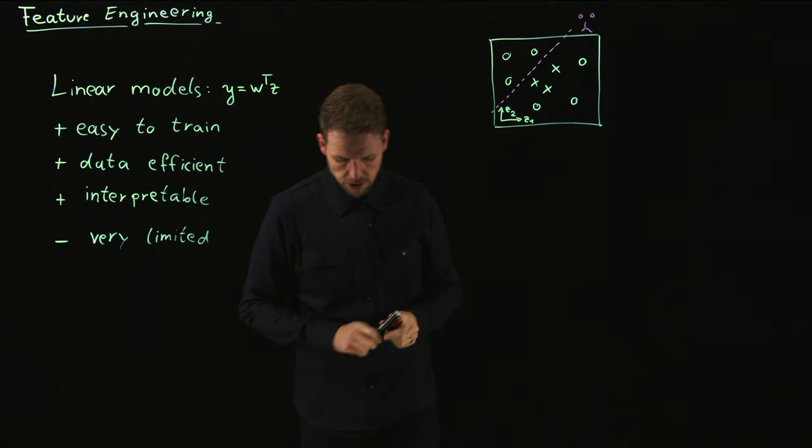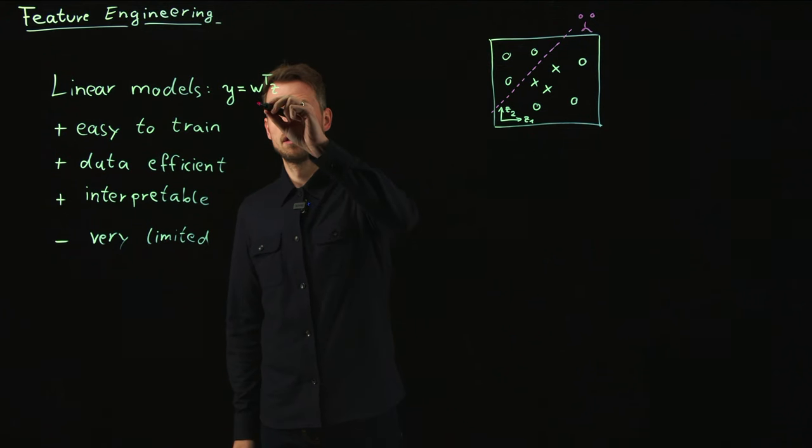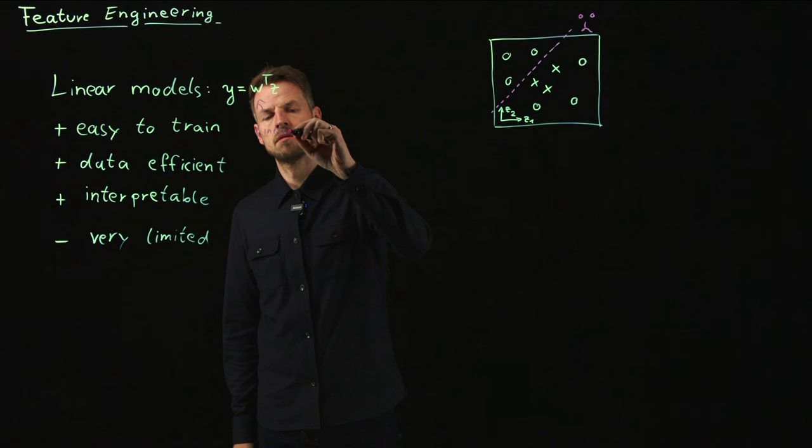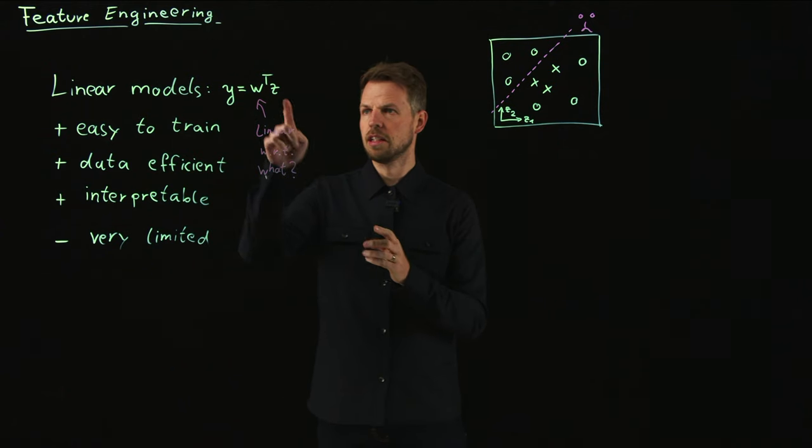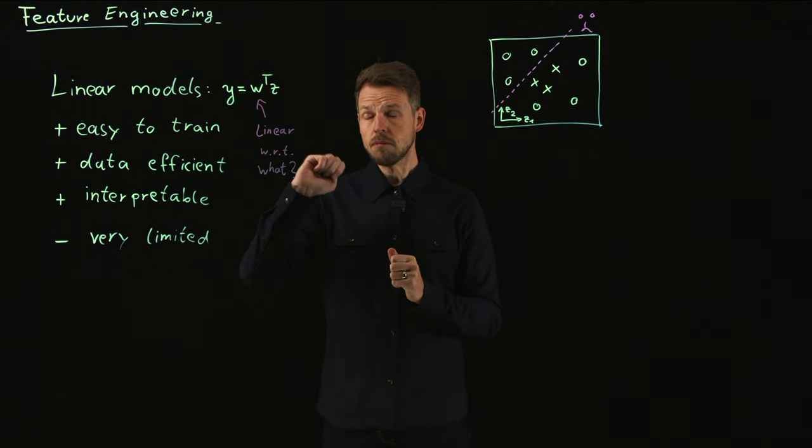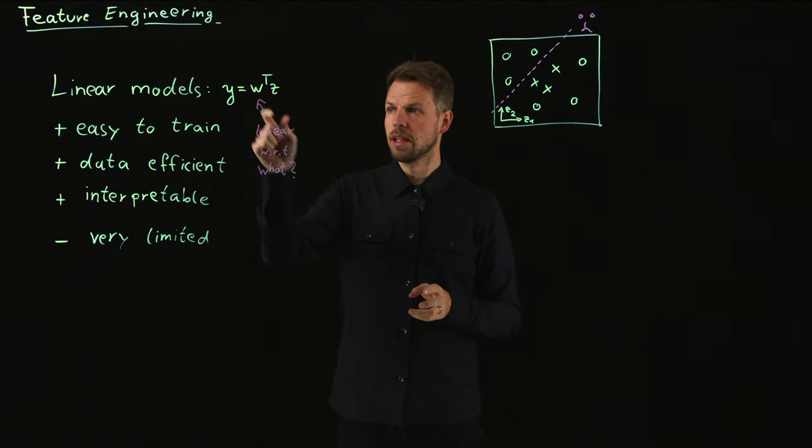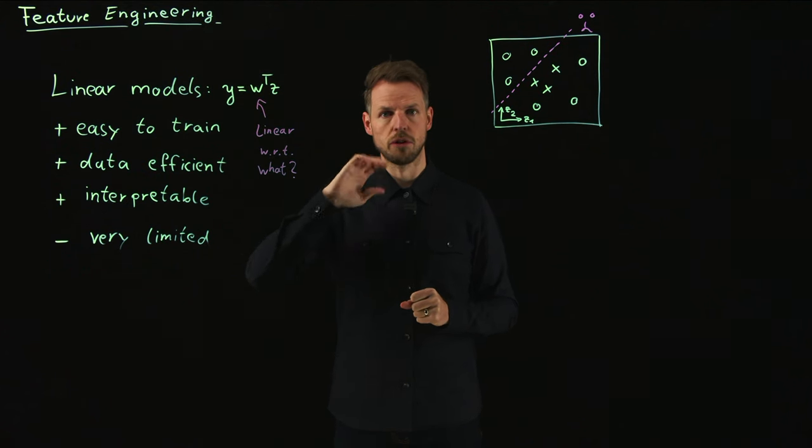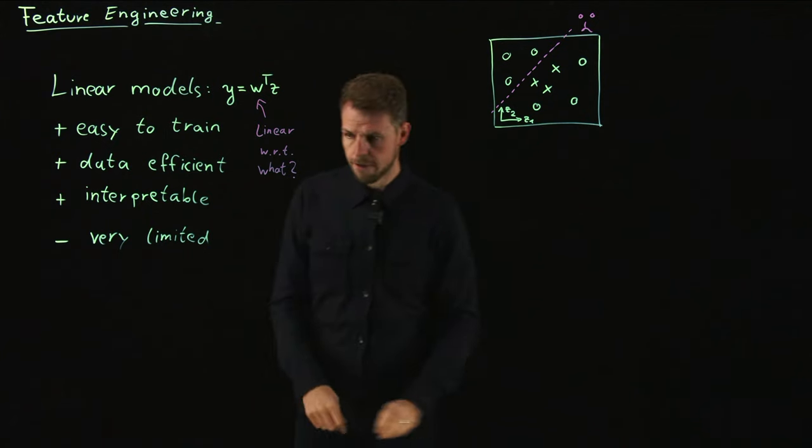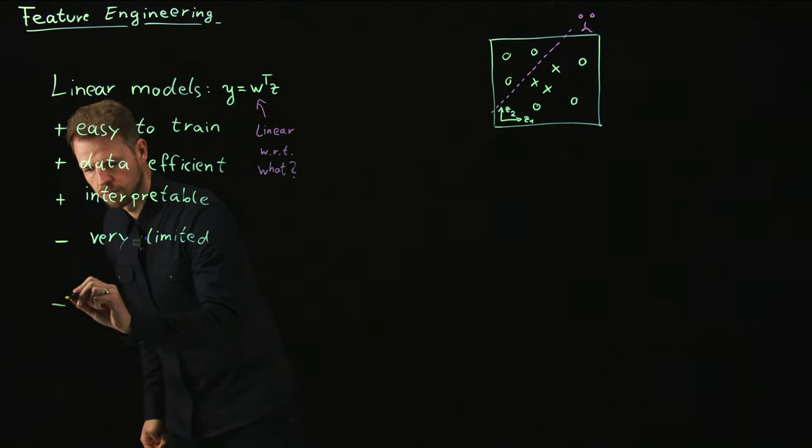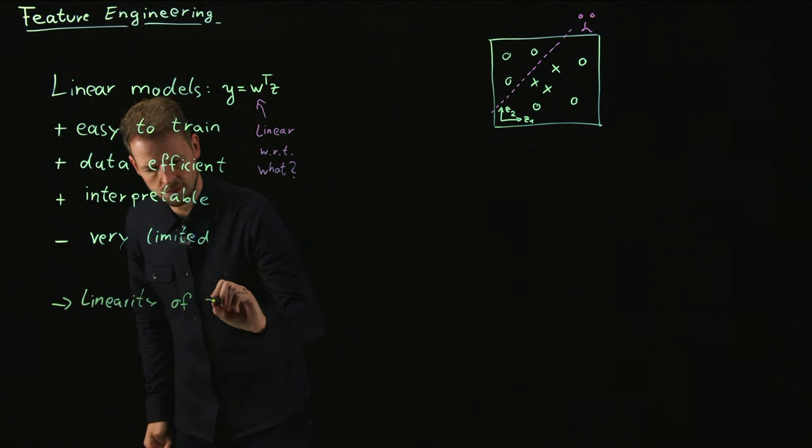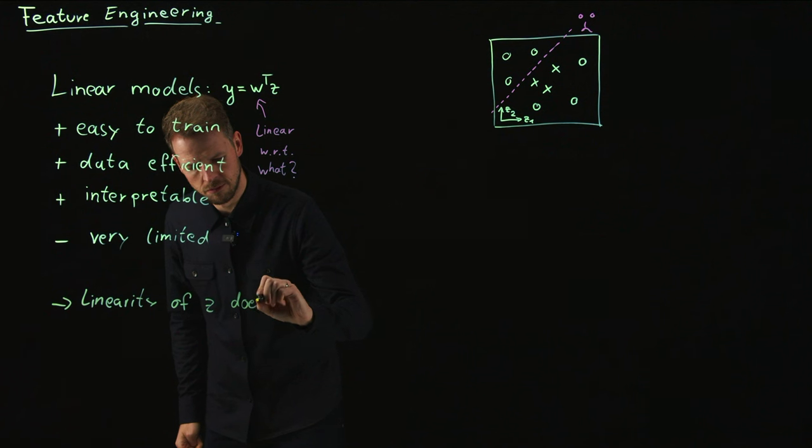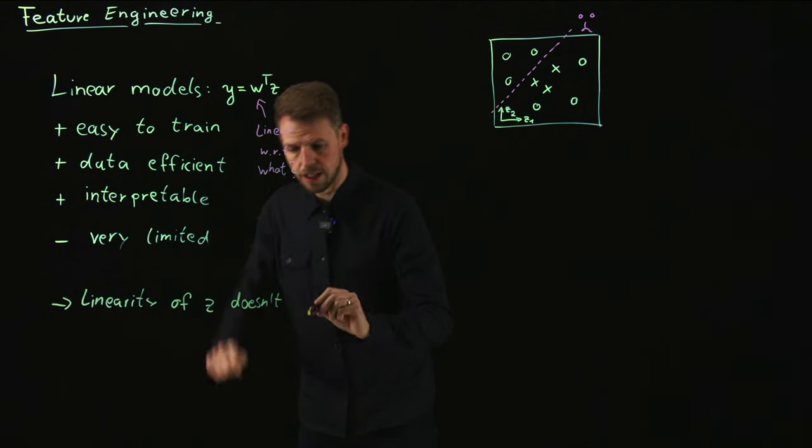The question that we need to ask here is linear model but linear with respect to what? If you think about this, usually people say it's linear because the z enters in a linear fashion. But this is not actually what matters to us in training. In training it matters that there's a linear dependency in terms of the W, of the weight vector. So the linearity of z doesn't matter.